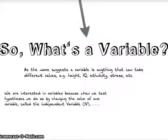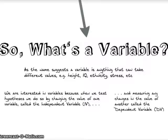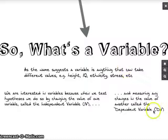We're interested in variables because when we test hypotheses, we do this by changing the value of one variable called the independent variable and measuring any change in the value of another one that we call the dependent variable. And there's that language of dependency again — the DV depends upon the IV.